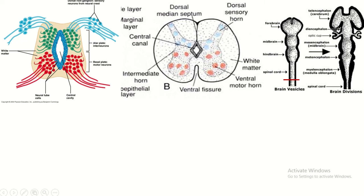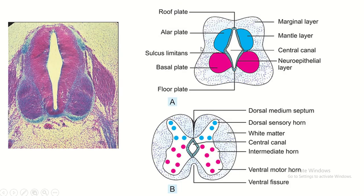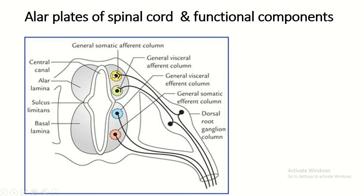This is what is derived from the LR plate — the LR plate is converted into the dorsal horn. Two functional components, the sensory components of the spinal nerve, are related with the LR plate. This is the general somatic afferent column, which collects sensory information from structures developed from the ectoderm and somite. And this is the general visceral afferent column, which collects sensory information from structures derived from the endoderm and splanchnopleural layer of the lateral plate mesoderm.